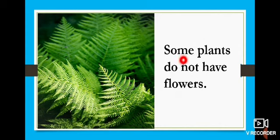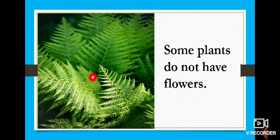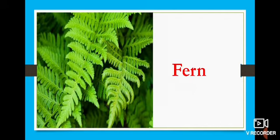Then we see that some plants do not have flowers. Look at this plant. Is there any flower in this plant? No. We can see only the green color leaves. Now look at here. The example for this is fern. F-E-R-N. Fern.